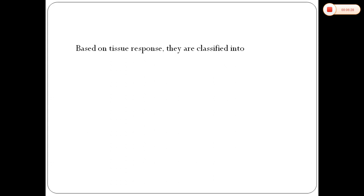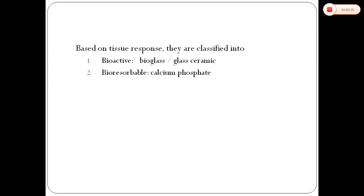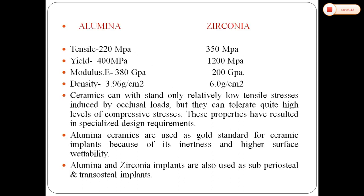Based on tissue response, ceramics are classified into: bioactive — bioglass, bioceramic; bioresorbable — calcium phosphate; and bioinert — alumina, zirconia, carbon. The differences between alumina and zirconia can be seen in the table shown in the diagram.